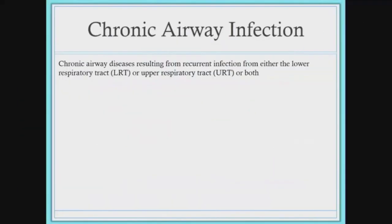Starting off pretty broad — you may have been introduced to a few different chronic airway infections like asthma or COPD. These are recurrent infections that could result from the lower respiratory tract — your trachea, primary bronchi, and lungs — or from your upper respiratory tract, which is your nasal cavity, larynx, and pharynx, or a combination of both. Things you inspire from your environment can enter through your nose, make their way down to the lower respiratory tract, colonize, and cause an infection.